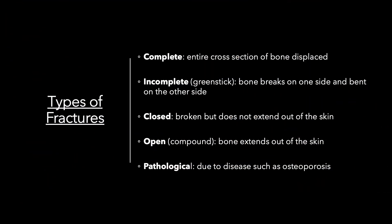An incomplete fracture — also termed a greenstick fracture — is the incomplete disruption of a bone. Closed fractures are not displaced or protruding out of the skin. An open fracture, on the other hand, penetrates the skin and is also termed a compound fracture — think 'open skin.'